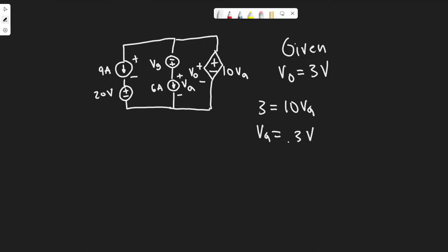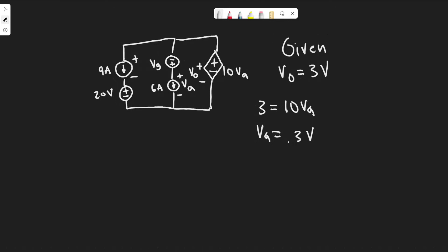Now we have the voltage across this element and this element. To solve for Vg, we're going to use Kirchhoff's voltage law, which allows us to sum up the voltage in a loop and solve for the missing variable. We're going to apply that voltage law to this loop right here, summing up the voltage of each of the components.